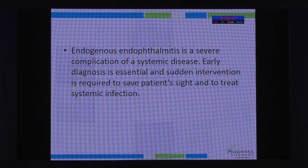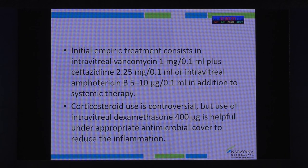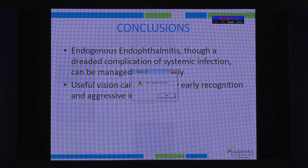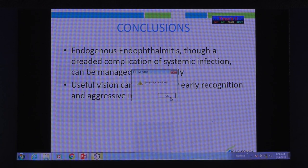Endogenous endophthalmitis due to mixed infection is a clinical challenge for both diagnosis and management, and can occur in immunocompetent young individuals. Early diagnosis is essential and urgent intervention is required to save the patient's vision and treat the systemic infection. Empirical therapy starts with intravitreal vancomycin and ceftazidime for bacterial endogenous endophthalmitis, and voriconazole for fungal endophthalmitis. Corticosteroid use is controversial but can be given under cover of appropriate antimicrobial therapy to control inflammation. Thank you.